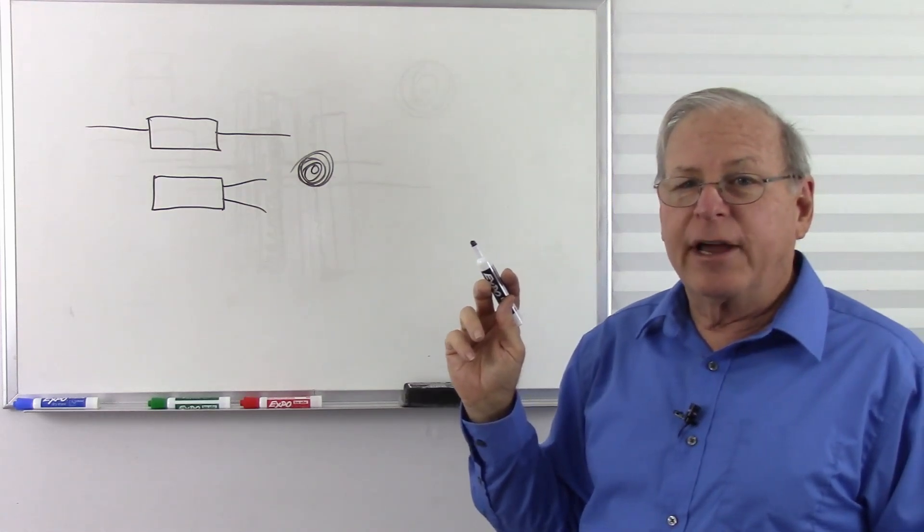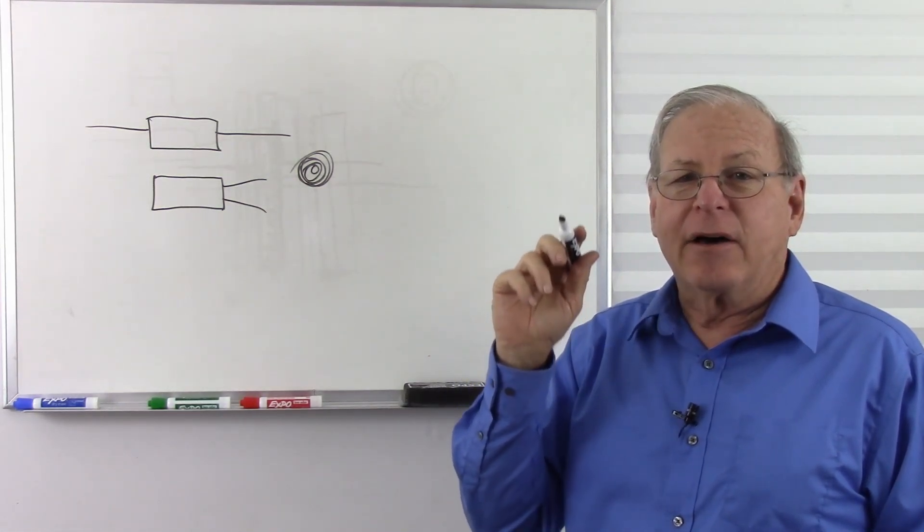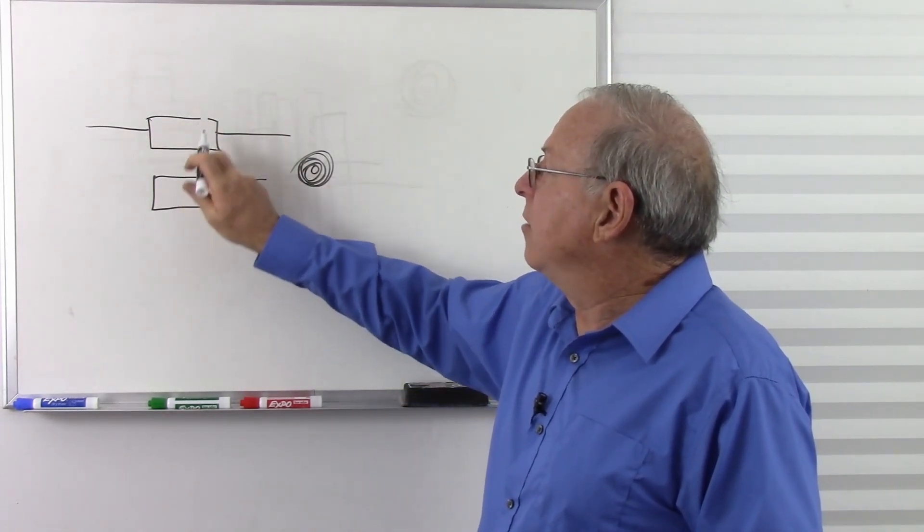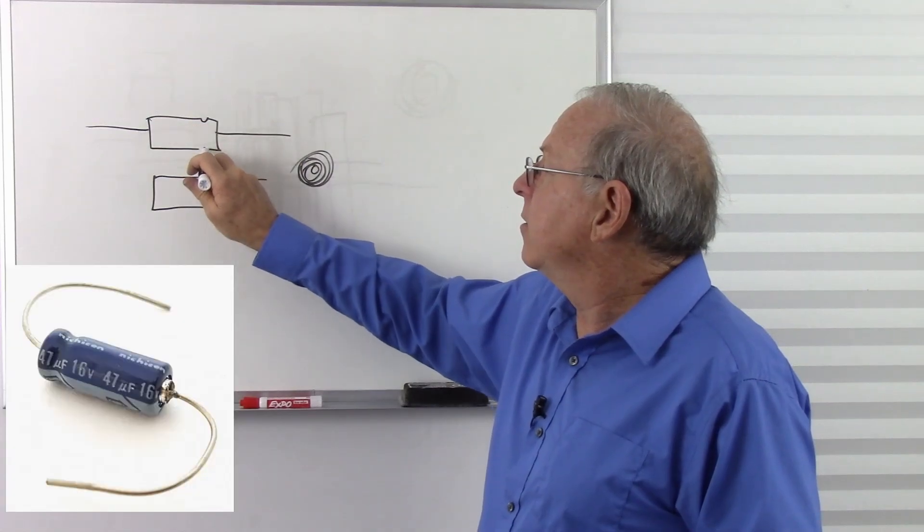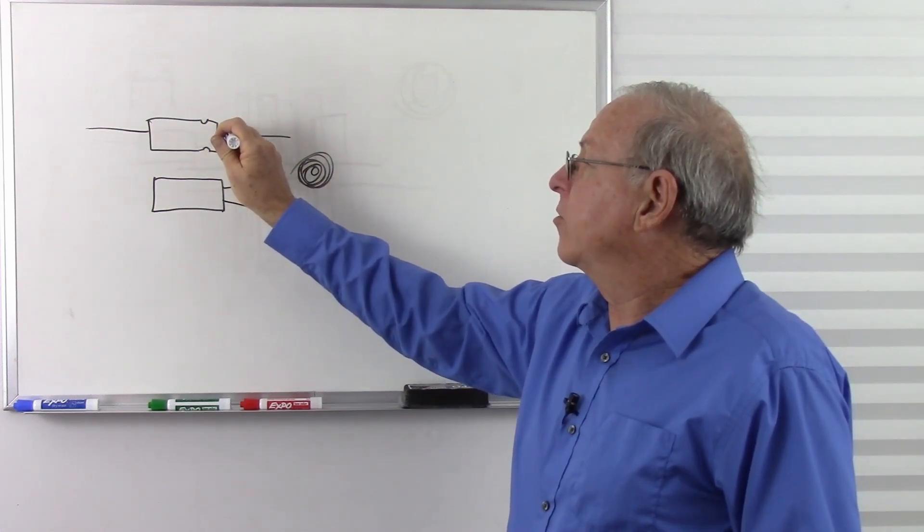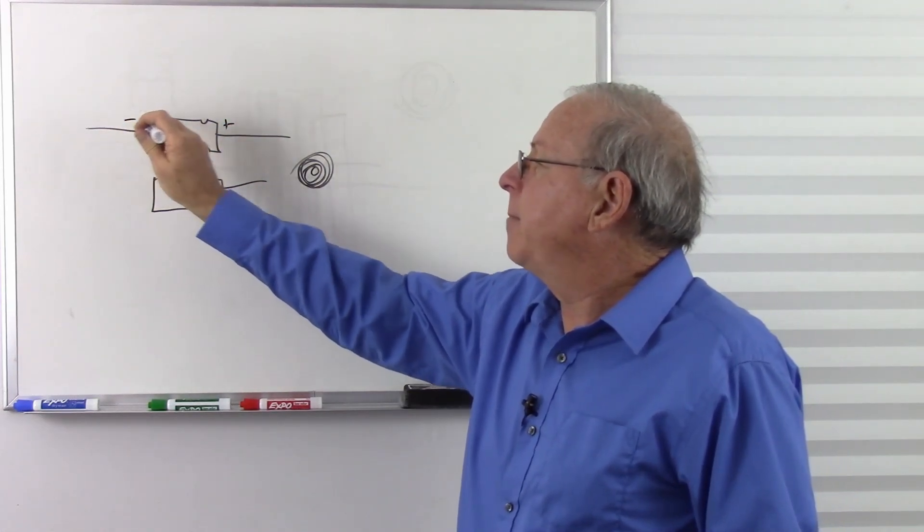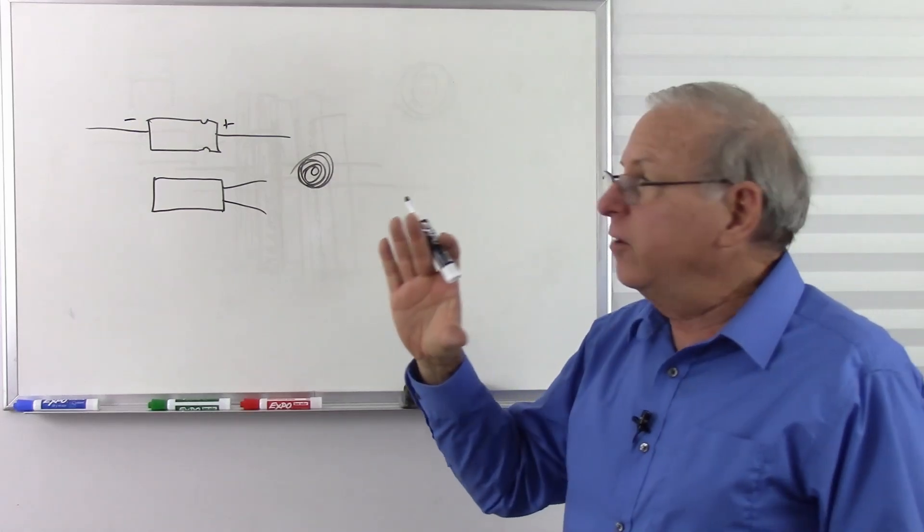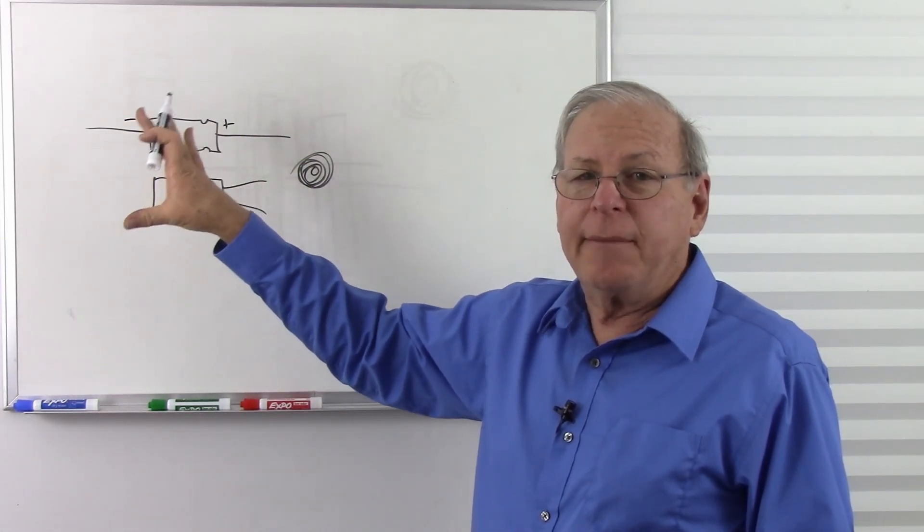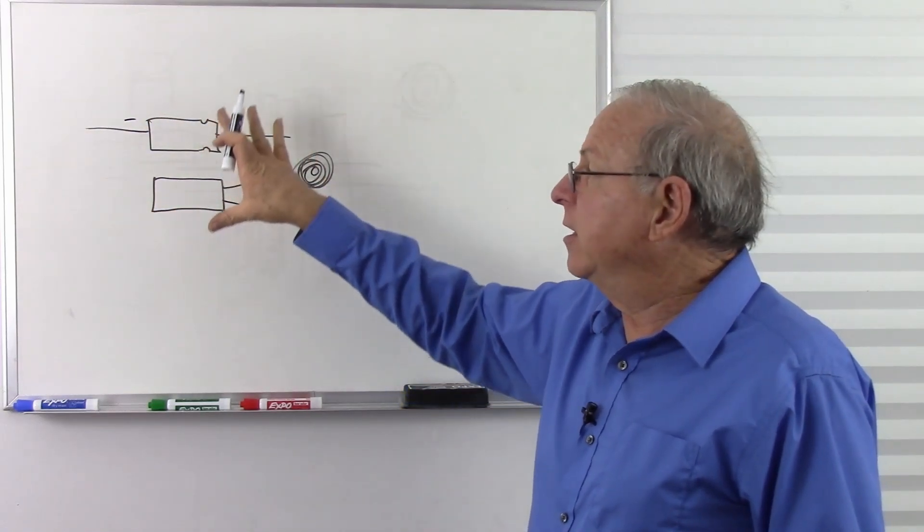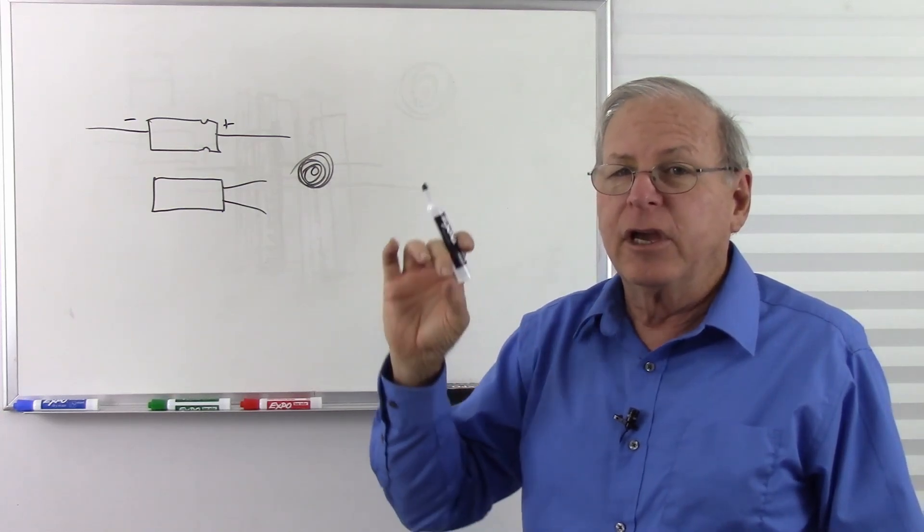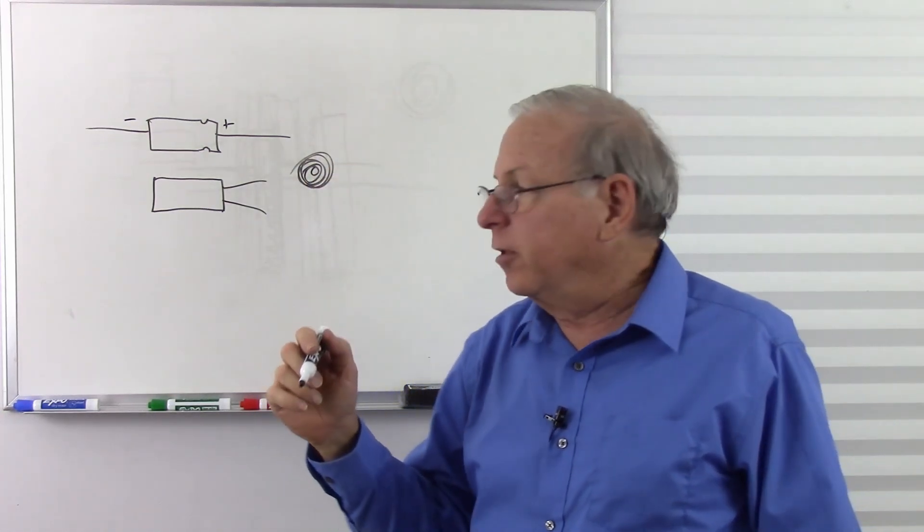One thing you'll always find about electrolytic capacitors is that they have the polarity labeled. So on the axial leads, there's often an indent on one side, and that indent represents the positive side of the capacitor. And electrolytic capacitors must always be installed in the proper polarity. So most of the time electrolytic capacitors are used in either a DC application or an application where there's a heavy DC bias, so that the alternating current stays in the same polarity.